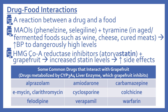Now we'll look at drug-food interactions. This is a reaction between a drug and a food. The first example is an older, commonly known interaction: MAO inhibitors — such as phenelzine or selegiline — combined with tyramine, which is an amino acid in aged or fermented foods such as wine, cheese, or cured meats, can cause an increase in blood pressure to dangerously high levels.